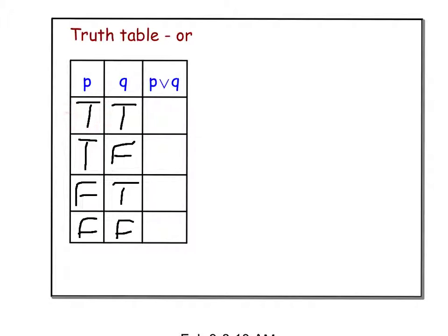In the first row, I have P true and Q true both, so I'm going to say P or Q is true.